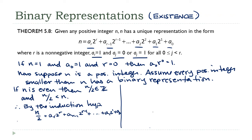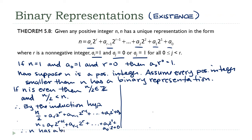Now multiply both sides by 2. If we do that, this becomes n equals a sub r times 2 to the r plus 1, plus a sub r minus 1 times 2 to the r, and so on out to a sub 1 times 2 squared, plus a sub 0 times 2. And if you want to see that constant term, you can write a 0 at the end. This is the form we were looking for, therefore n has a binary representation. That's what we needed to show for when n is even.